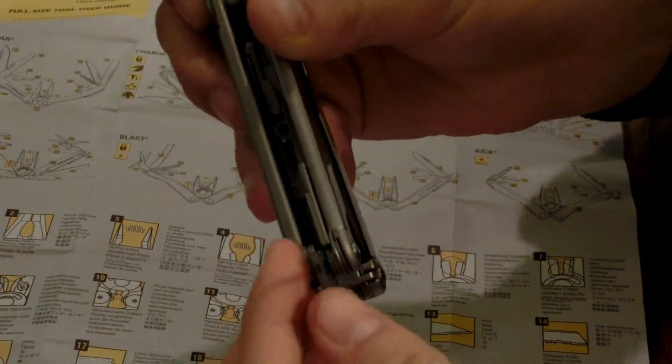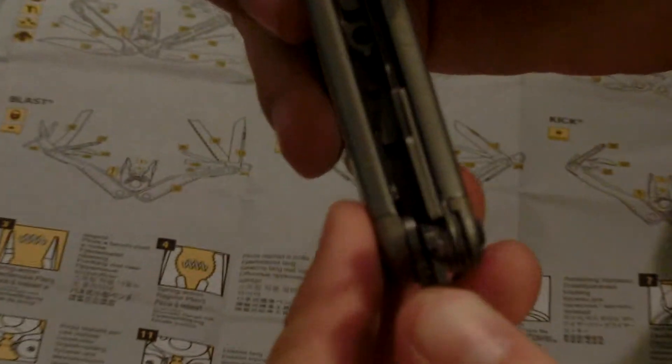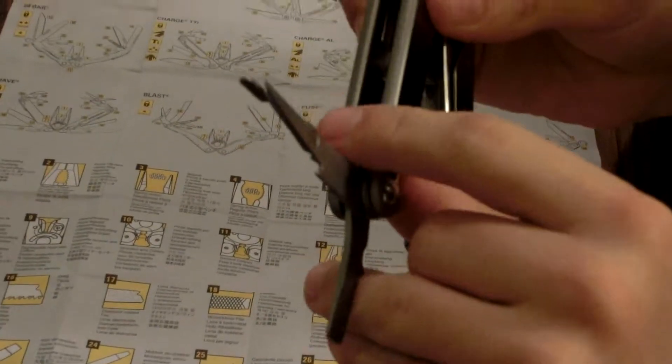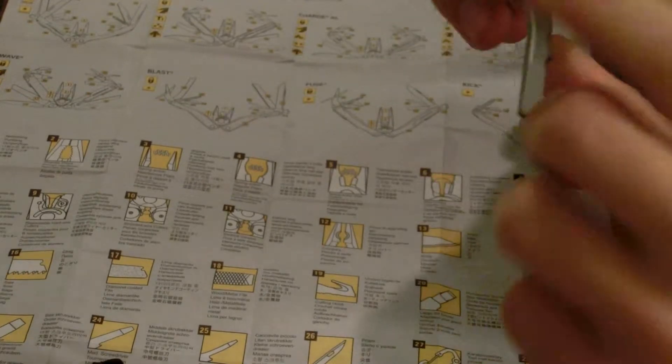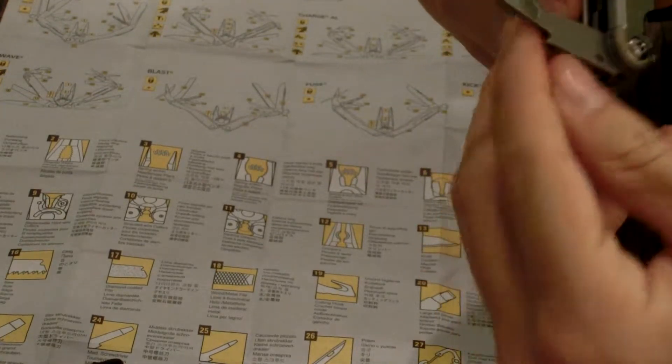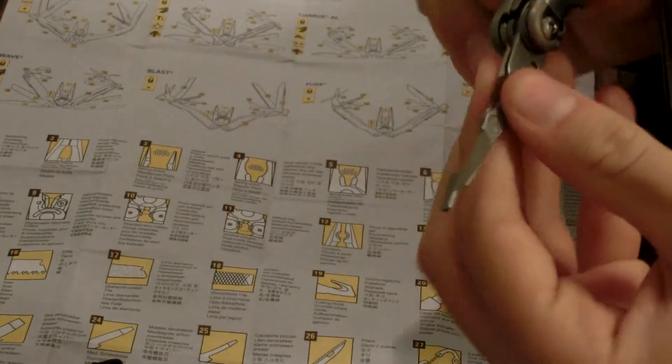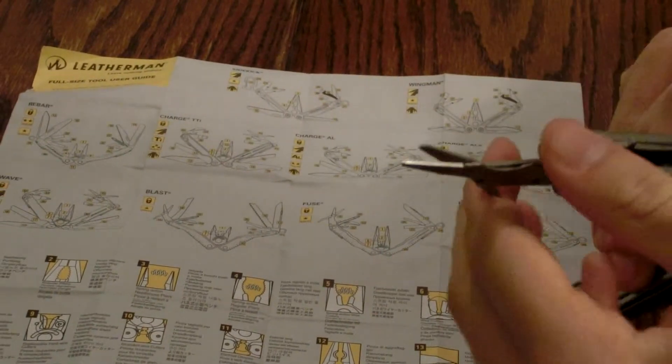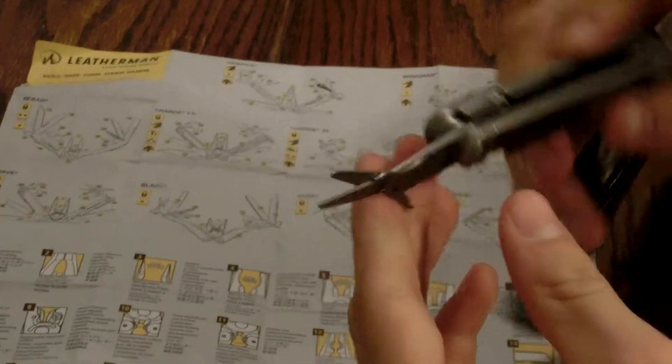Then you also have a mini flat head and Phillips head, really small for like eyeglasses specifically. Then last but not least, you have your scissors. These are a great little pair of scissors.